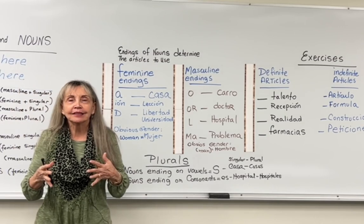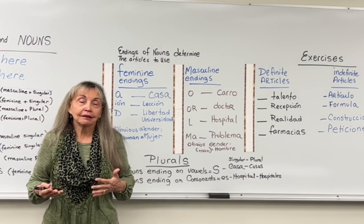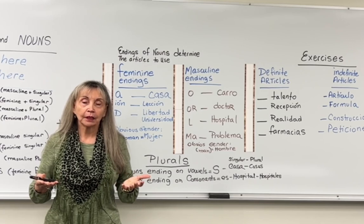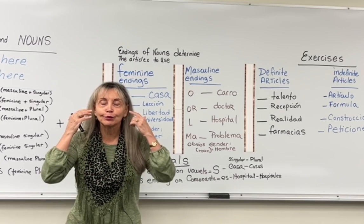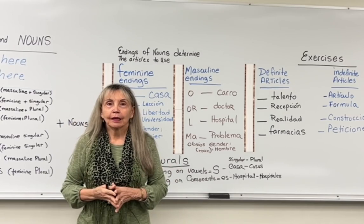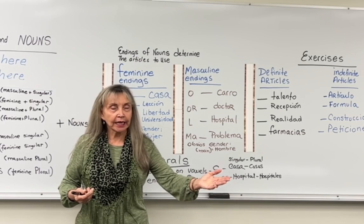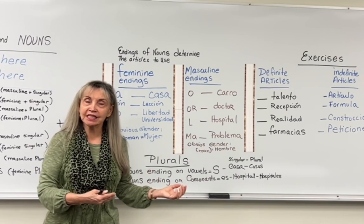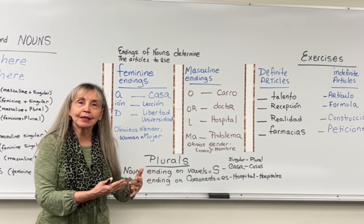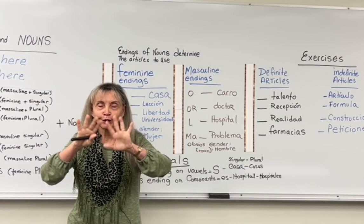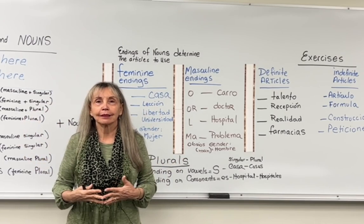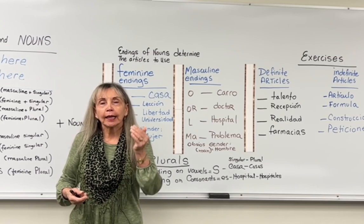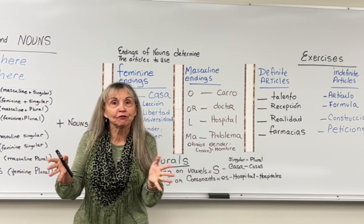All nouns in Spanish have gender, and all nouns in Spanish may also have number. This has nothing to do with the gender we are used to expressing in general. For example, 'escritorio,' which is a desk, is masculine. Or 'silla,' which is a chair, is feminine. So that has nothing to do with the general connotation that gender has in other conversations. Endings are important — they determine gender. And if we are using verbs, which will be another lesson, the ending of the verb will determine if it is in present or past tense.